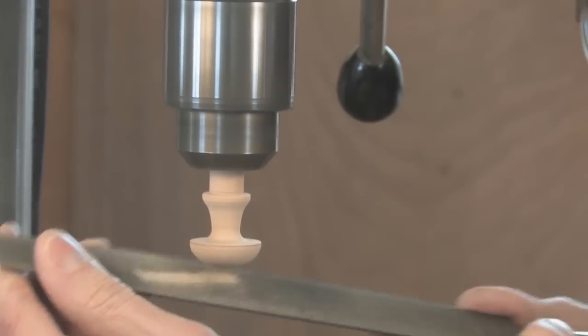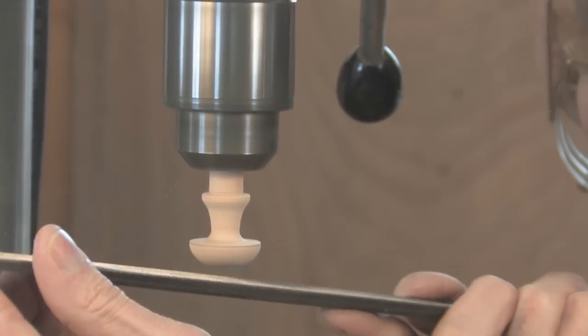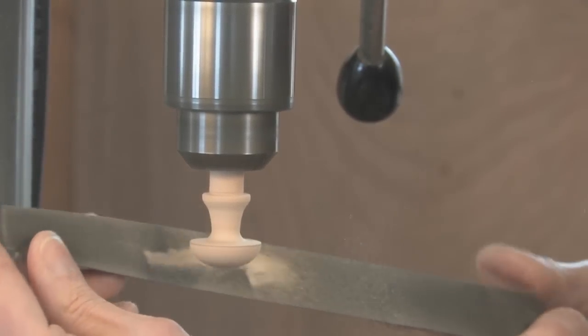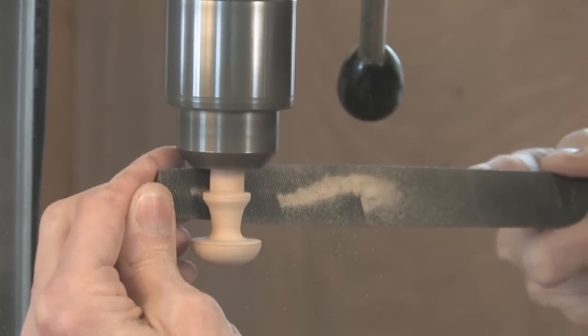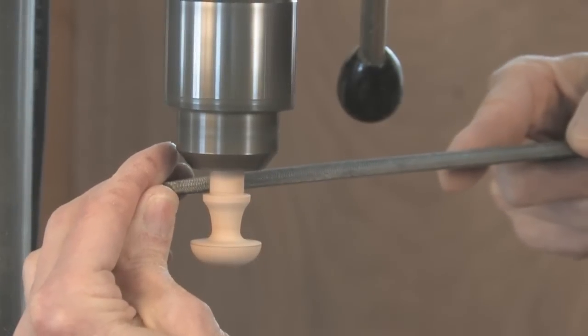Get it to the rough shape desired, and then you can use a file to take some of the scratch marks off. While you're at it, you can also file the vertical section of the shoulder.